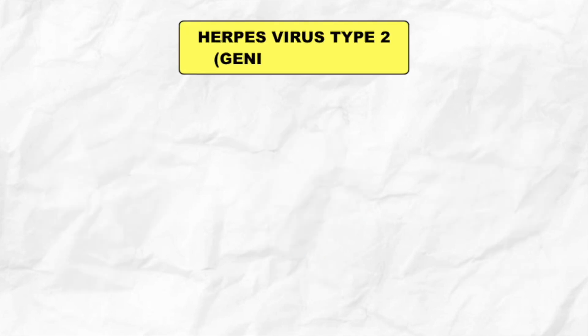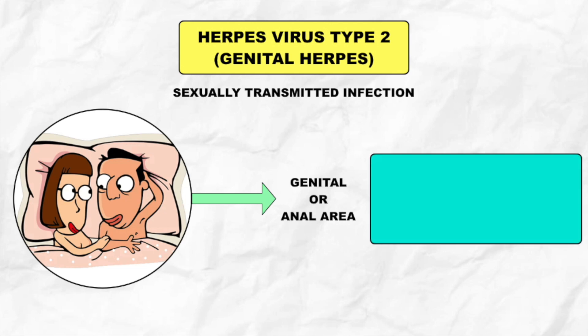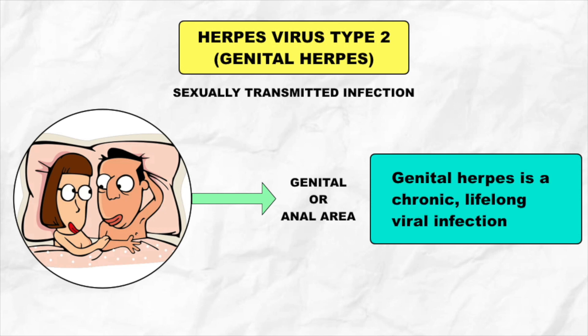Herpes simplex virus type 2, or genital herpes, is a sexually transmitted infection. It is transmitted by genital to genital contact during sex, causing infection in the genital or anal area. Genital herpes is a chronic and lifelong viral infection.